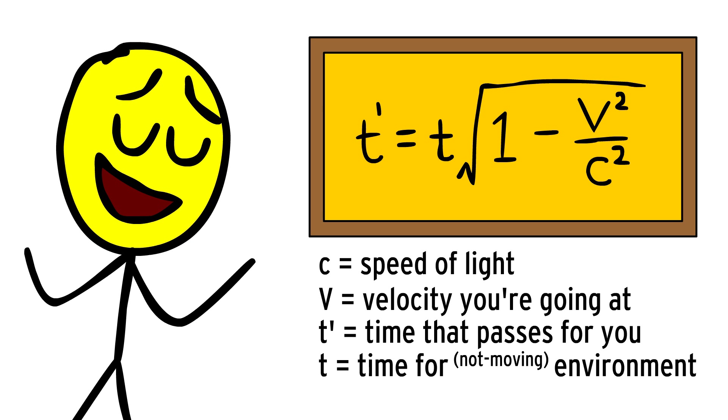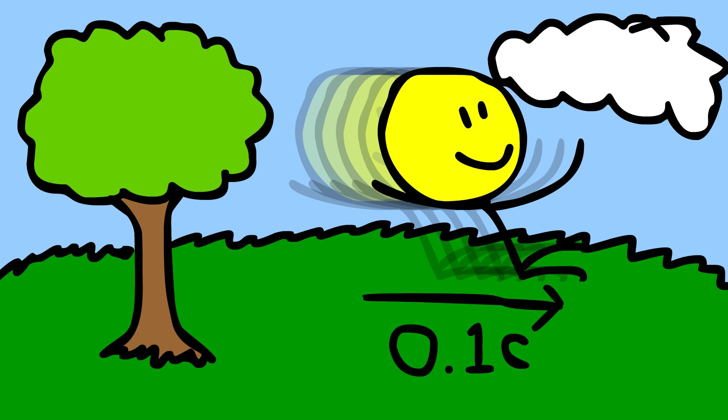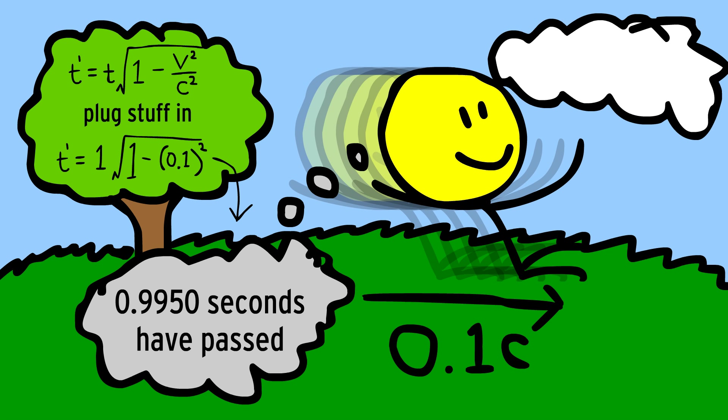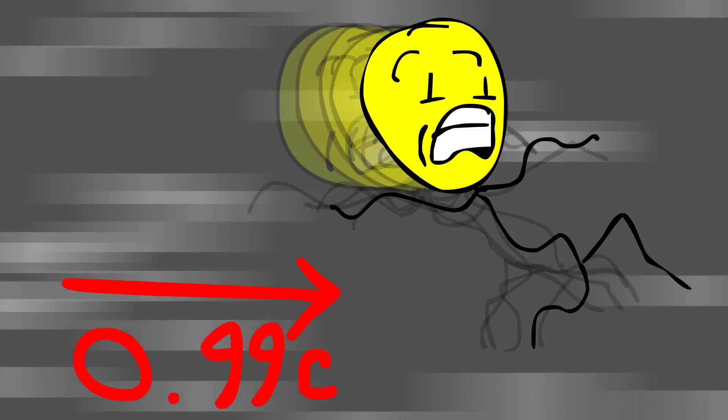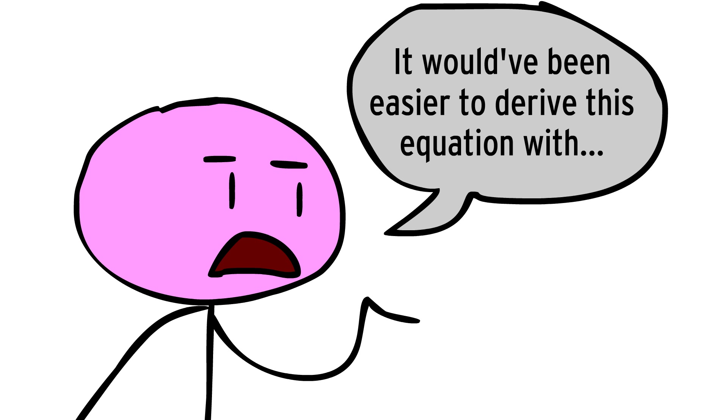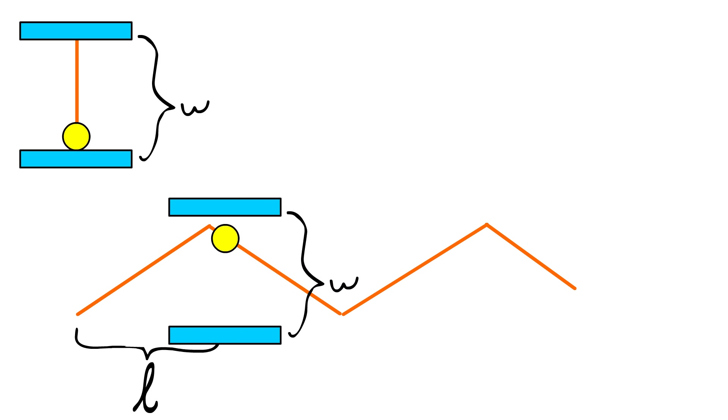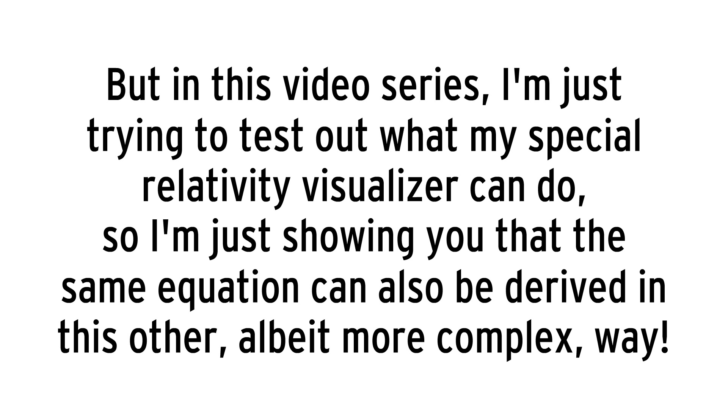Bam. Equation derived. Using this equation, you can figure out that if your environment thinks 1 second passed, then if you're traveling 10% the speed of light, only 0.9950 seconds have passed for you. At 50% the speed of light, your clock will have only ticked forward 0.866 seconds, and at 99% the speed of light, you will have experienced only a mere 0.141 seconds. Some of you might be thinking that it would have been easier to derive this equation with that moving double mirror clock thing. With that method, you can just use the Pythagorean theorem and you're done. But in this video series, I'm just trying to test out what my special relativity visualizer can do. So I'm just showing you that the same equation can also be derived in this other, albeit more complex, way.